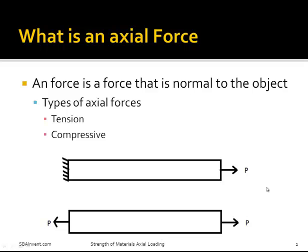Axial loading is a force that is normal to the part's central axis. There are two types of axial loading: tension, which is when the part is being pulled apart and is written as a positive number, and compression, which is when the part is being pushed together and is written as a negative number. If you do not write these as positive or negative numbers, you should specify that the part is in tension or compression.